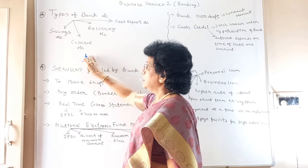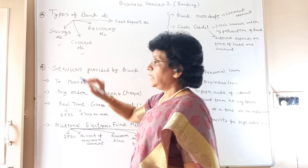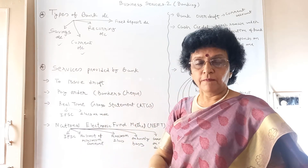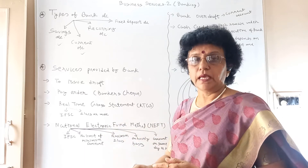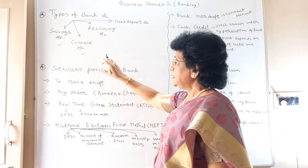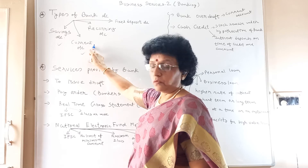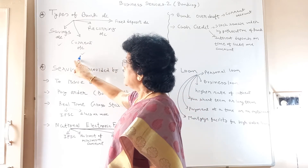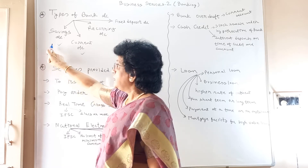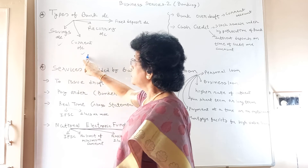Second is the current account. The current account is an account which is maintained by the businessman. Those having more number of transactions a day — more withdrawals and more deposits into the bank account — because they are taking more service of the bank, no rate of interest is given on the current account. Businessmen maintain current account; service class people maintain savings account. There is a restriction of withdrawal and deposit in savings, while in current account there is no restriction.